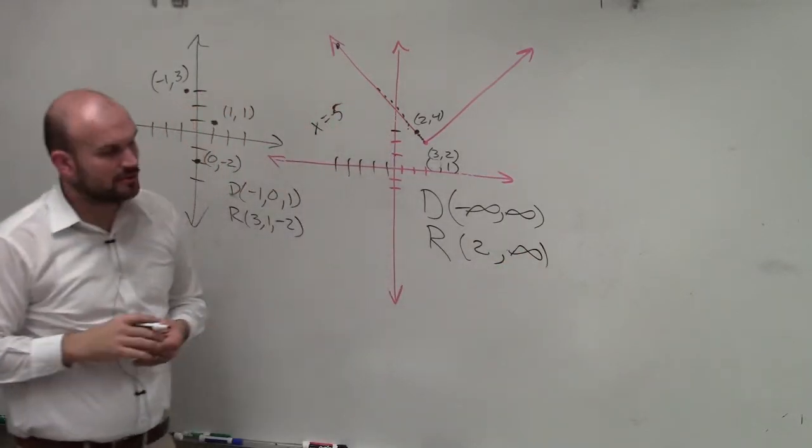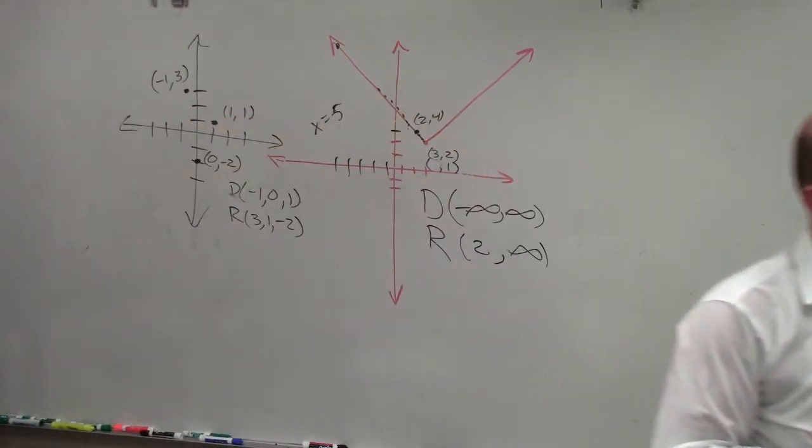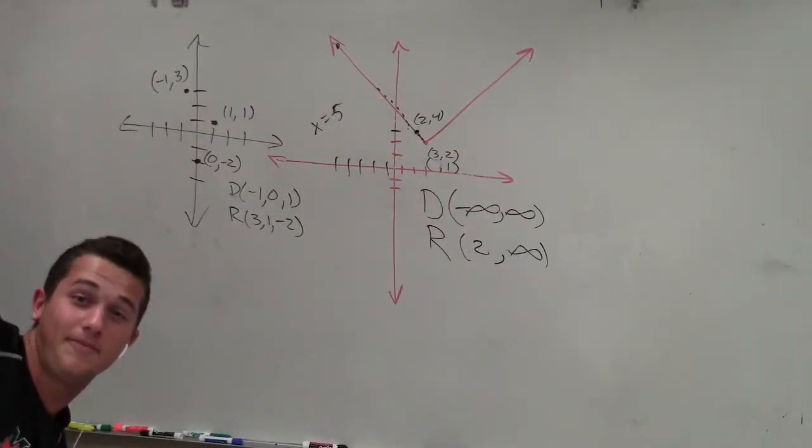So that is your domain and range. That's it? That's it. Okay? It's a little bit different than when you're dealing with points.